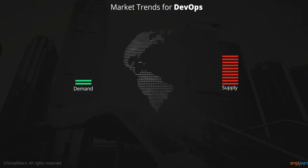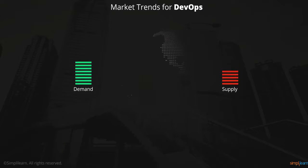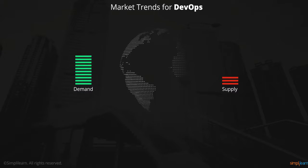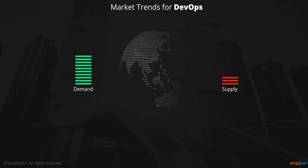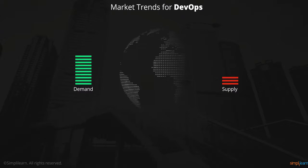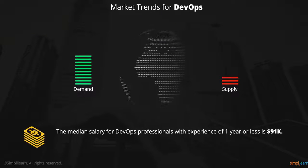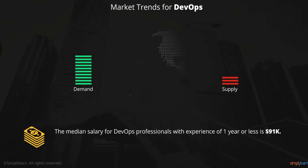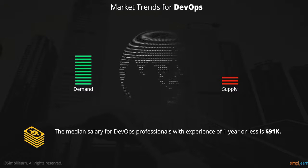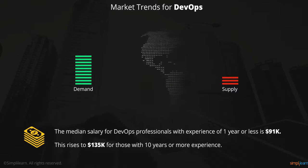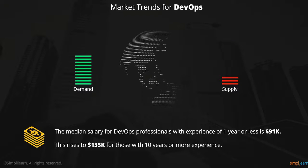We are already witnessing a sharp increase in demand for DevOps engineers around the globe. DevOps engineers are in short supply and companies are finding it difficult to fill job vacancies. As a result, there are many vacant DevOps jobs that need to be filled. The median salary for DevOps professionals with experience of one year or less is $91,000, rising to $135,000 for those with 10 years or more experience.